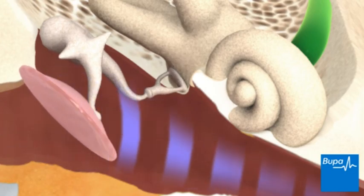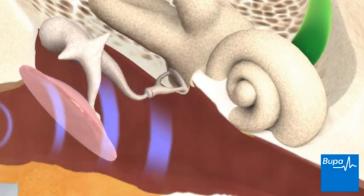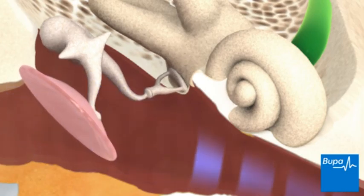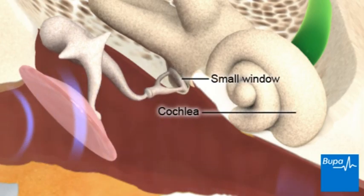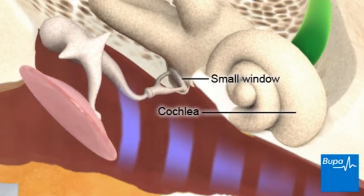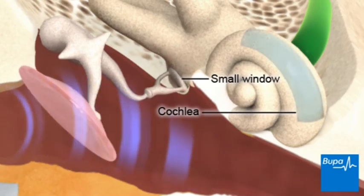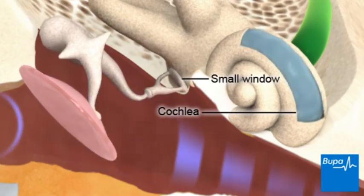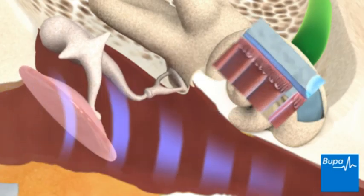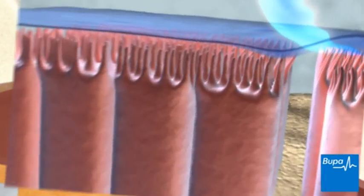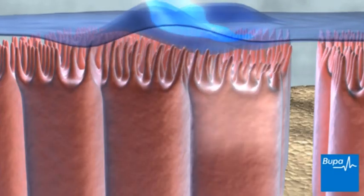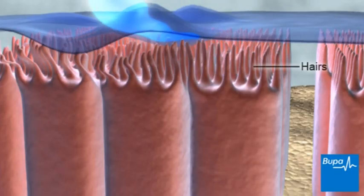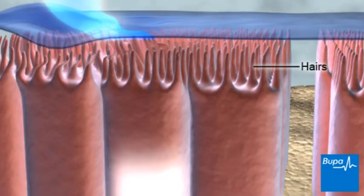The vibrations from the ossicles pass through a small window and into a part of the inner ear called the cochlea. Sound waves travel through the fluid of the cochlea and make the tiny hairs move.